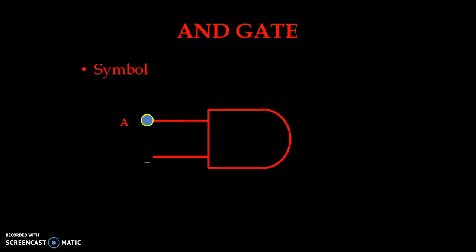In the AND gate we have a minimum of two inputs; there can be more than two inputs also. As shown in the figure, we have A and B — two inputs — and one output. The output is normally indicated by Y. This is the symbol for the AND gate. You can observe it and try to draw the same symbol on your own.